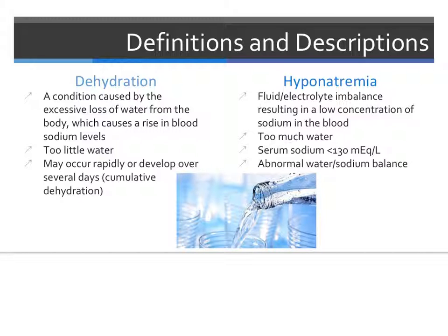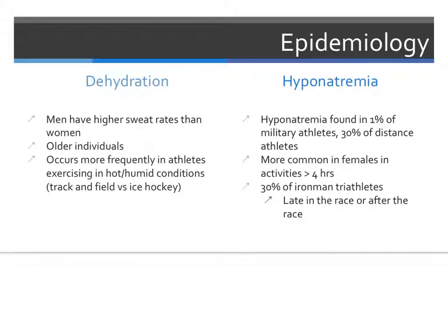Hyponatremia is a fluid electrolyte imbalance resulting in low concentration of sodium in the blood. Hyponatremia results from too much water being added to the system without sufficient salt intake. Dehydration occurs more commonly in men than women due to their higher sweat rates. However, hyponatremia tends to occur more frequently in women participating in activities lasting longer than four hours, such as marathons and triathlons.